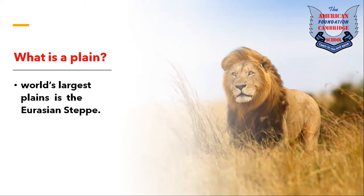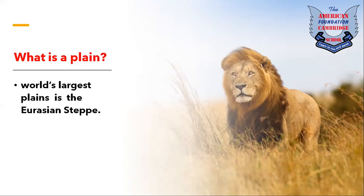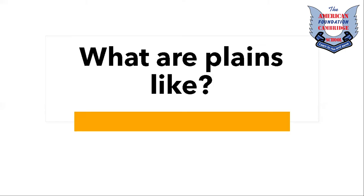What are steppes? Steppes are a large area of flat, unfenced grassland found in southeastern Europe or Siberia. Steppes are found in places with a temperate climate and very little rain. Temperate climates are those without extremes of temperature and precipitation.